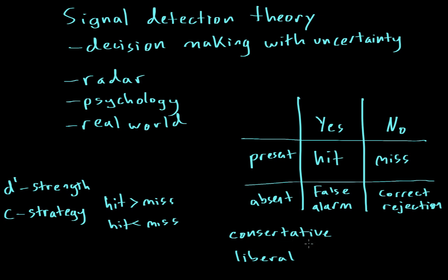If you have a conservative strategy, you would always say no, unless you're 100% sure that the signal is present. And the bad thing about that is that, even though you'll get all the correct rejections, you might also get some misses. On the other hand, you can have a liberal strategy where you always say yes, and in that case, you'll always get all the hits. However, you might get a few false alarms. These are the two different strategies that you can use. This would be strategy, and this would be the strength. So, d prime and c.